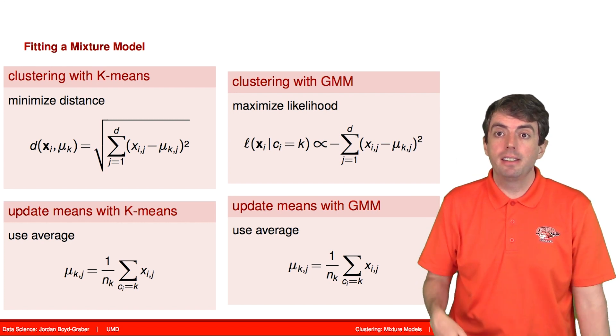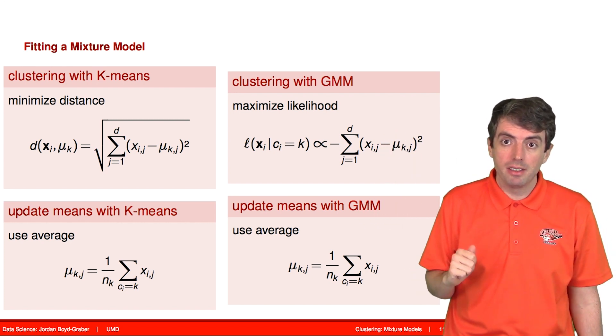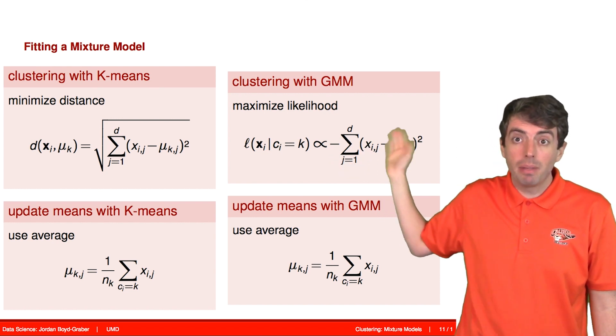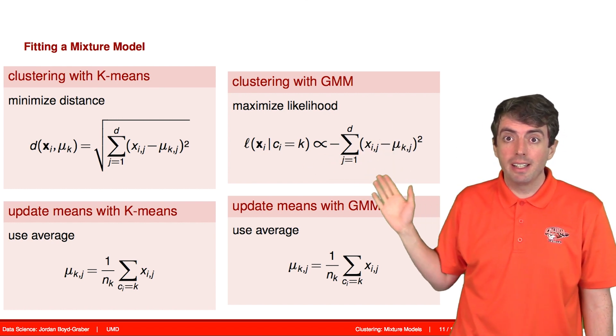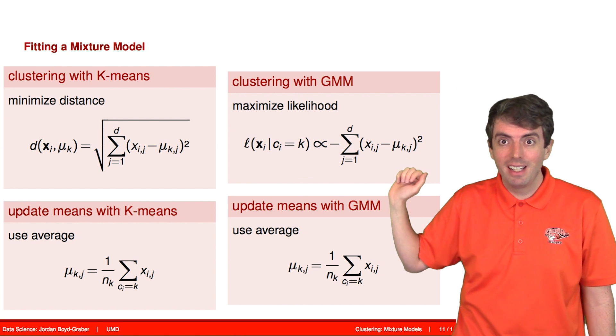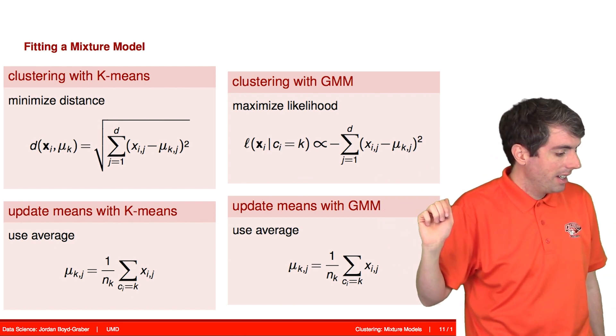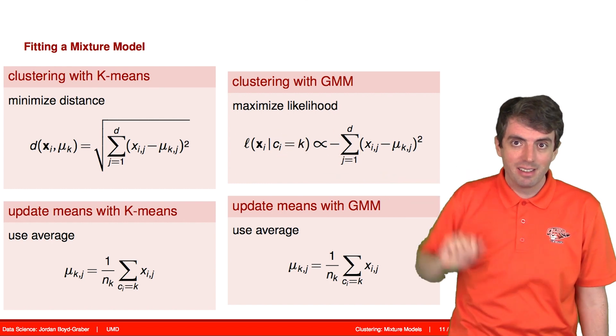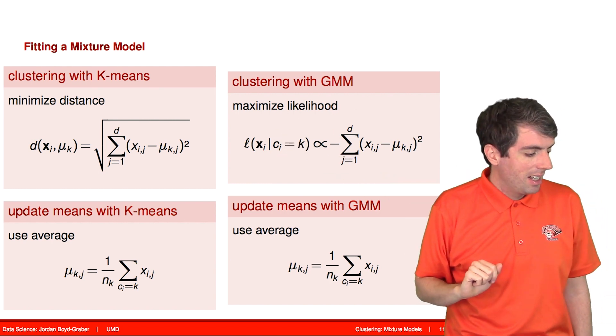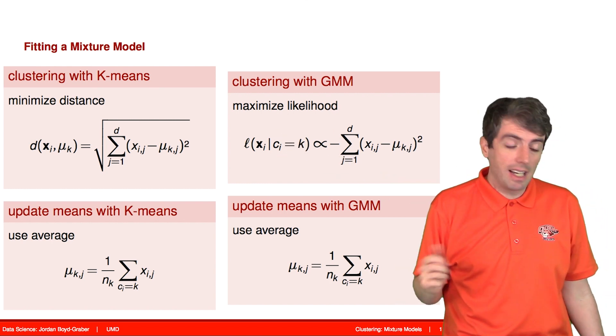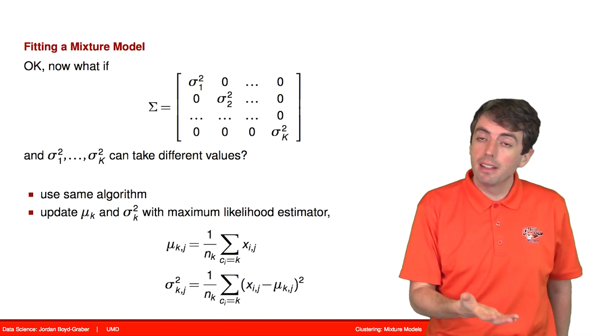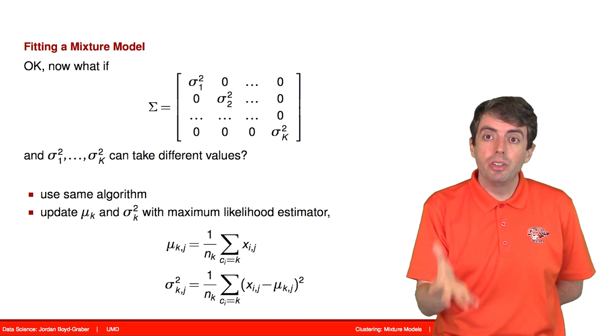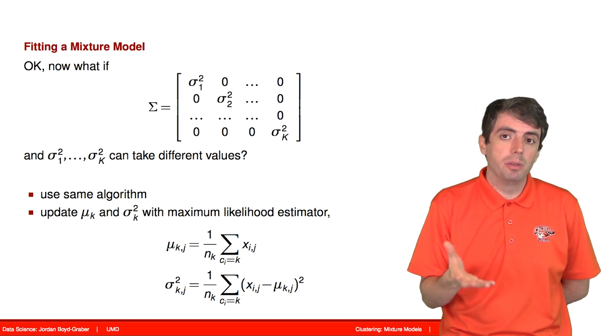So if we put k-means and Gaussian mixture model fit with, this is called hard EM, side by side, you actually get very similar equations. The only difference is that you have a square root in k-means on the distance, and everything else is exactly the same.